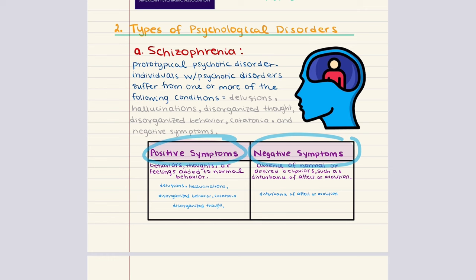There are also other psychotic disorders that differ from schizophrenia by the presence, severity, and duration of psychotic symptoms. As a general trend, other psychotic disorders present symptoms to a lesser degree in comparison to schizophrenia.